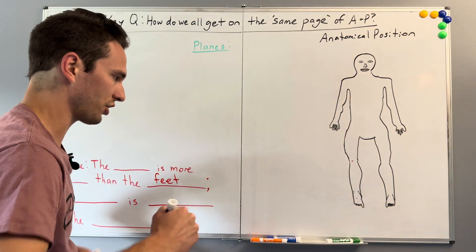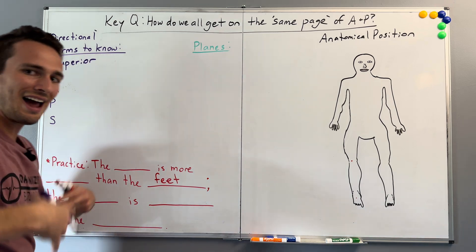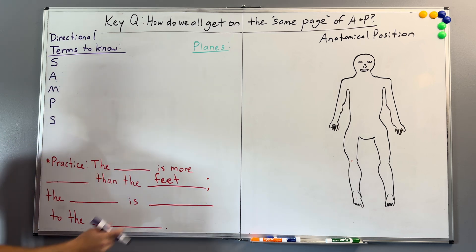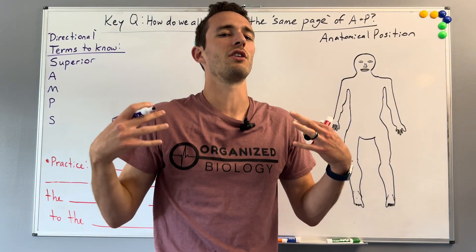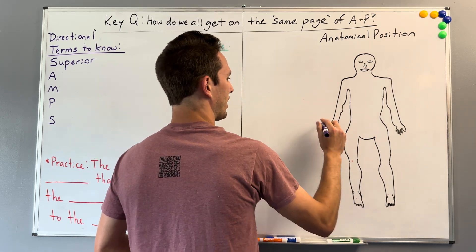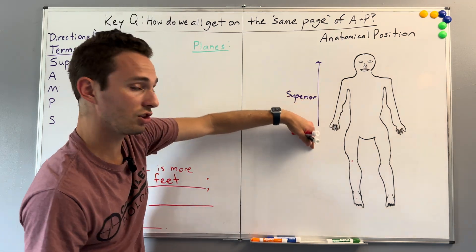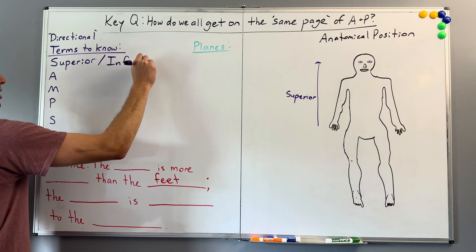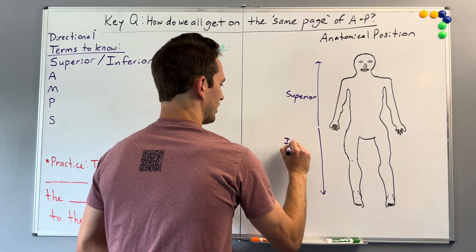Let's start with the first directional term. The first one is called superior. Superior — you can remember it as feeling superior to somebody means you feel above them. Anytime we're talking about something in the upward direction in the human body, we're going to say that is superior. We also need a term for things lower than a certain place, and that's the opposite term: inferior. If you feel inferior to somebody, you feel below them. Anytime we move downward, we're talking about inferior.